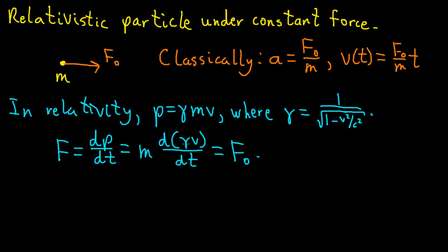If we assume that the velocity at time 0 equals 0, so our particle starts at rest, we can integrate this equation pretty easily. Moving the m to the other side and integrating, we get gamma v equals F0 over m t.